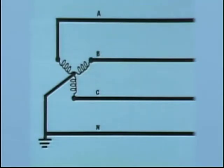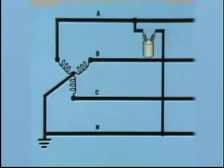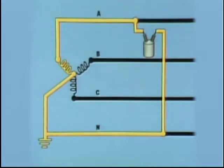In order for distribution equipment to function in a Y system, connections are typically made between at least one of the three phases and neutral. For example, a single-phase distribution transformer could be connected between phase A and neutral. With these connections, current circulates through one phase of the system and the system neutral — in this case, the A phase and neutral.